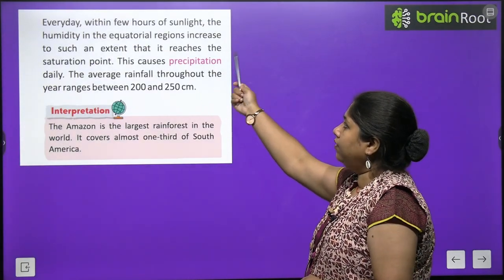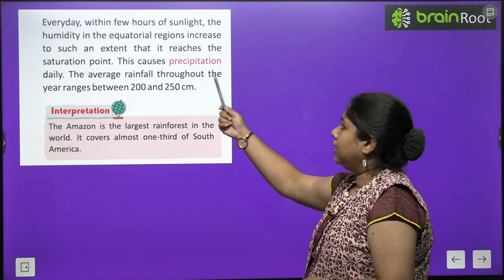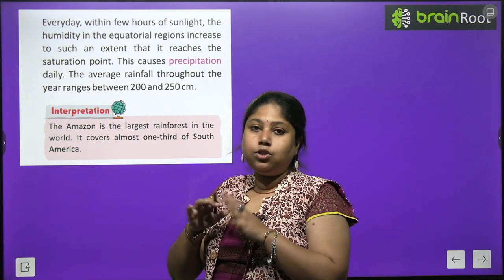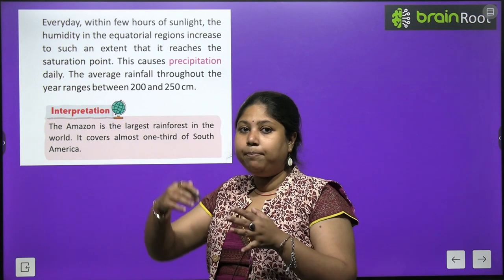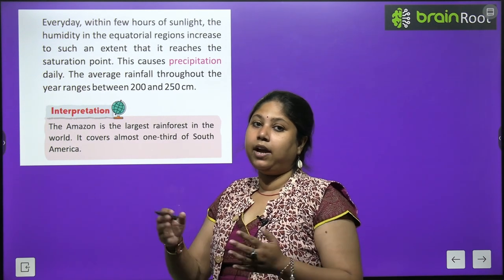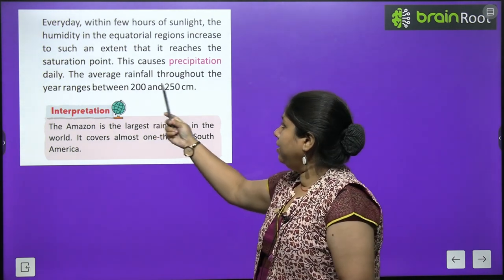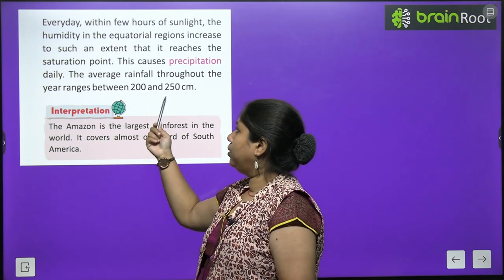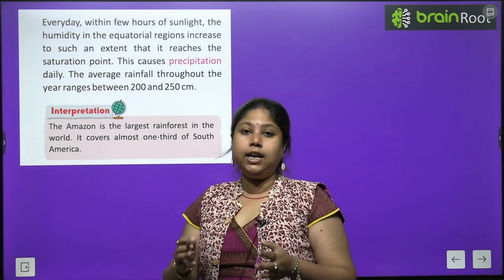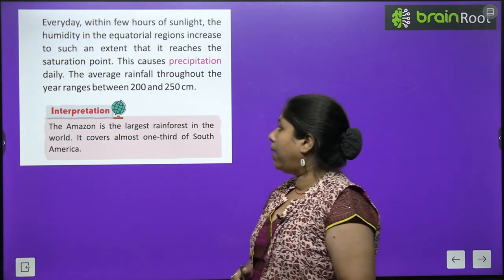Every day, within a few hours of sunlight, the humidity in equatorial regions increases to such an extent that it reaches saturation point. This causes precipitation daily — vapour forms and slowly changes into clouds, and then finally rainfall occurs. Therefore, rain falls almost every day in these places. The average rainfall throughout the year ranges between 200 and 250 cm, making these among the places with maximum rainfall in the world.